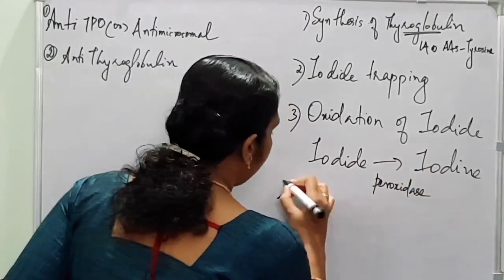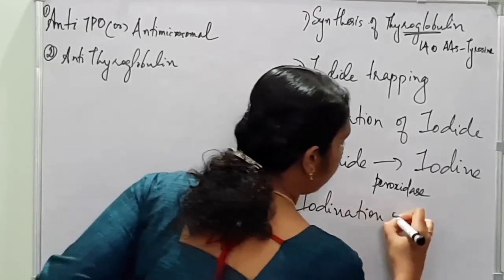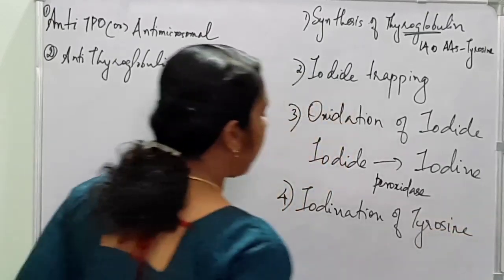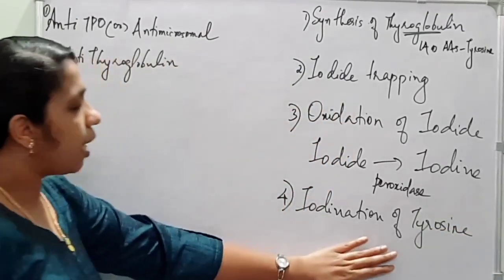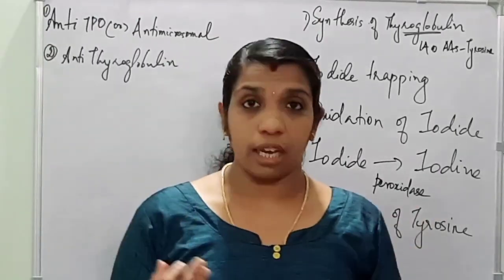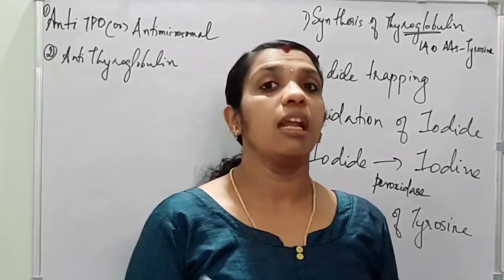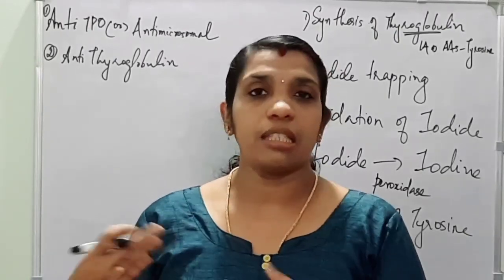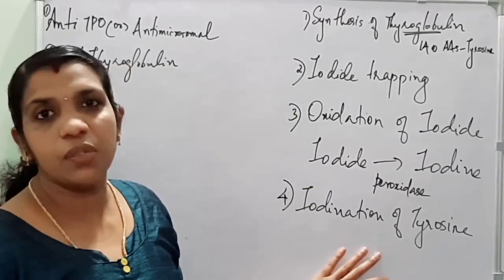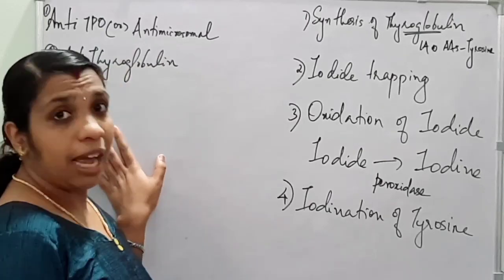The fourth step is iodination of tyrosine. Here, tyrosine gets iodinated and monoiodothyronine is formed; two molecules combine to form diiodothyronine, and further T3, T4, etc. will be formed. We are not going to go into the details of this fourth step since it is not needed to understand these antibodies.